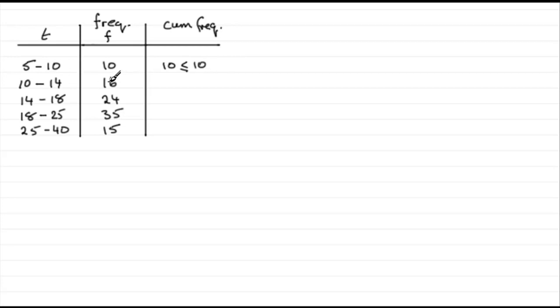And then we've got a total now of 10 and 16, 26 values which are less than or equal to the upper bound of 14. And if we carry on down the table, just adding these up, we get 50 are less than or equal to 18, and 85 less than or equal to 25, and finally 100 less than or equal to the upper bound, 40.